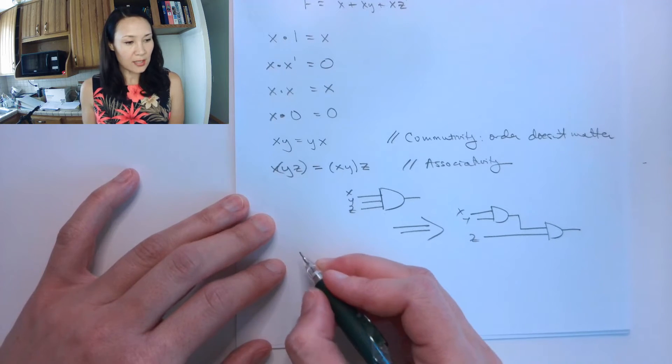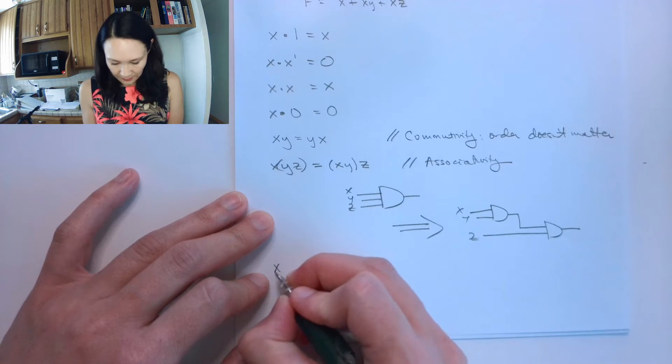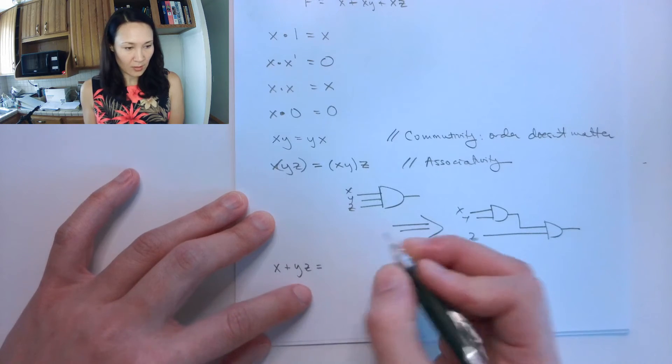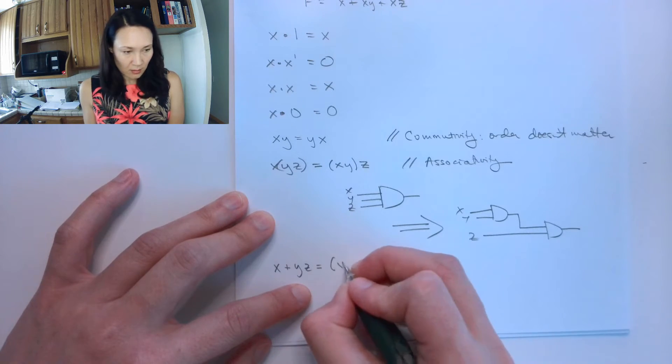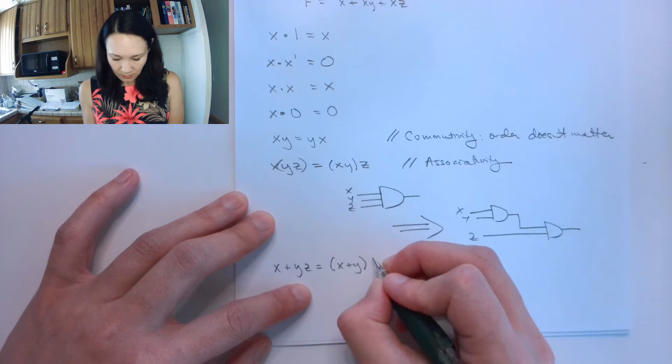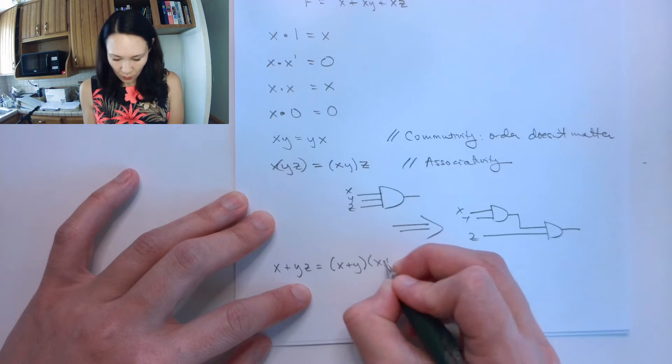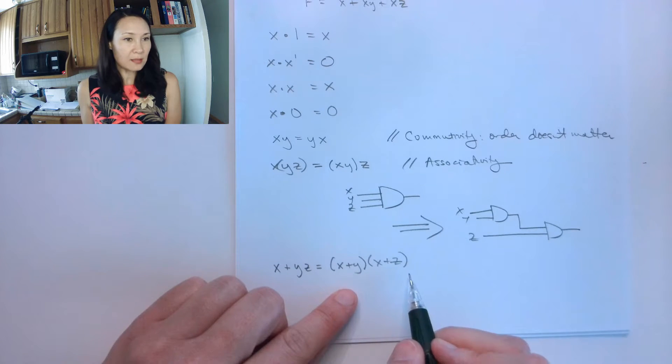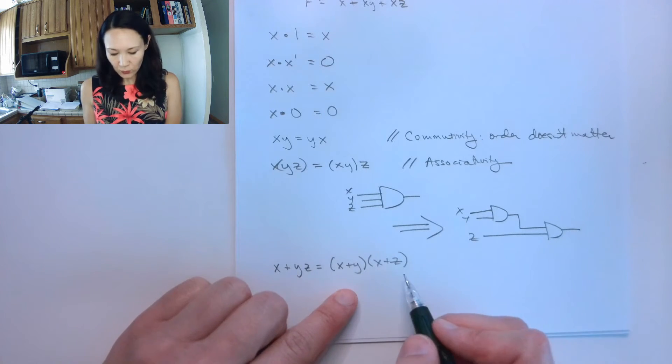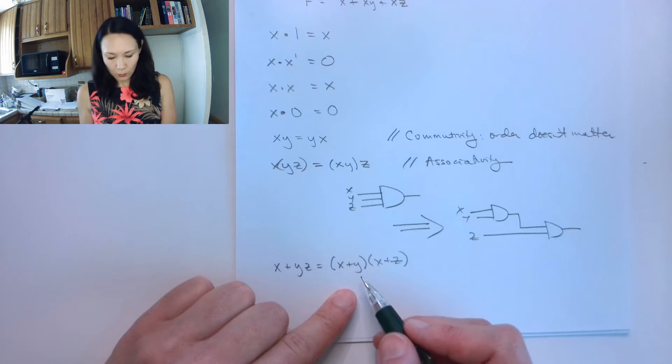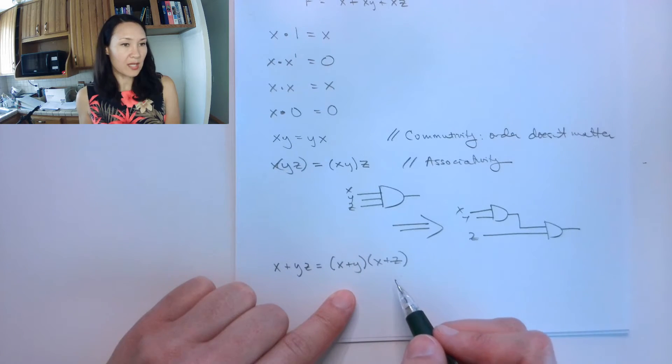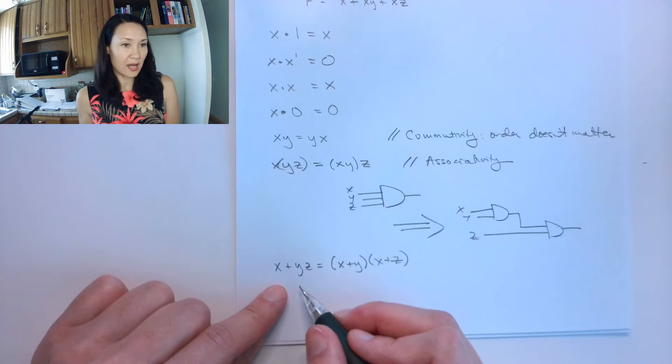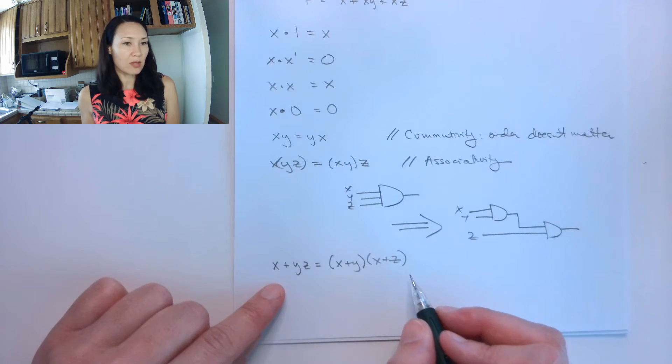The next one is distributivity: x ANDed with y OR z equals x ANDed with y, ORed with x ANDed with z. This kind of begs to be foiled, so if you had this right-hand side and you were to foil it and do the appropriate cancellations using these previous identities, you'll get this left-hand side. We'll do some practice with these later.